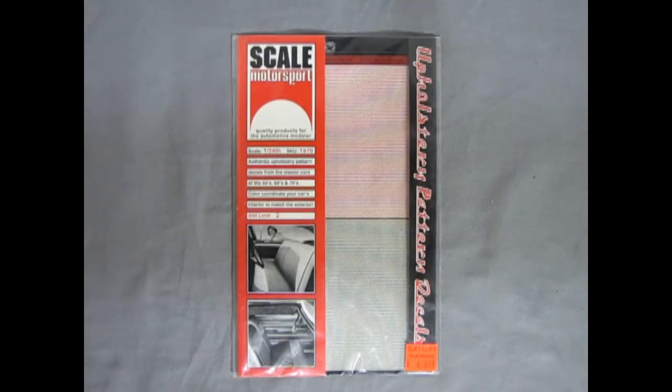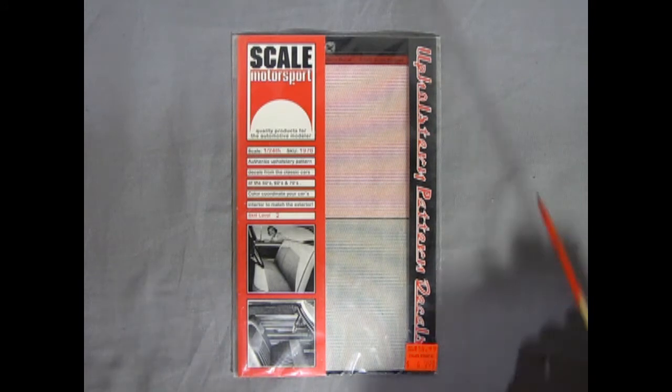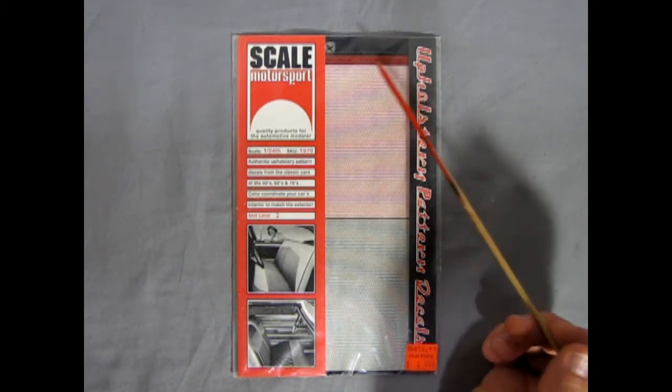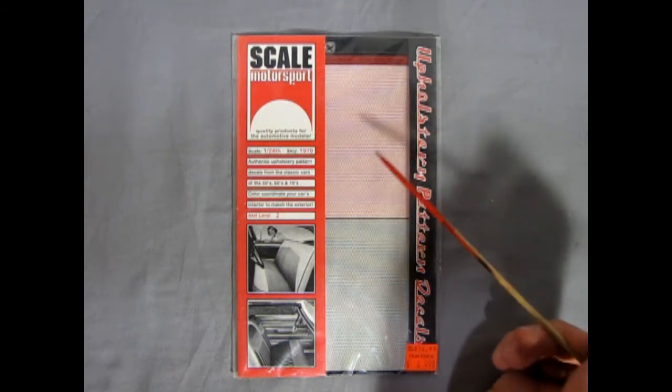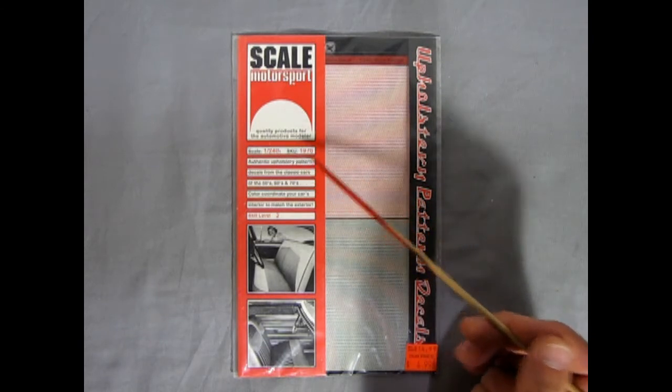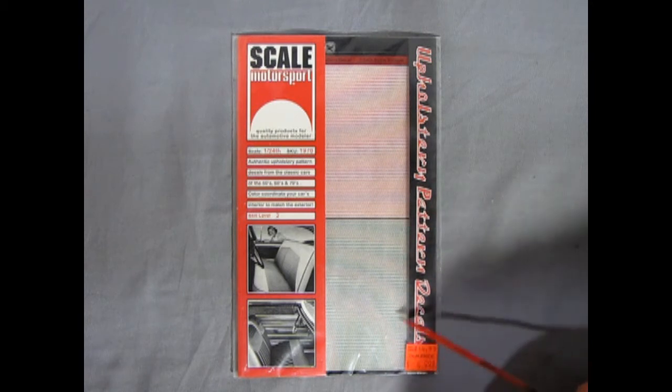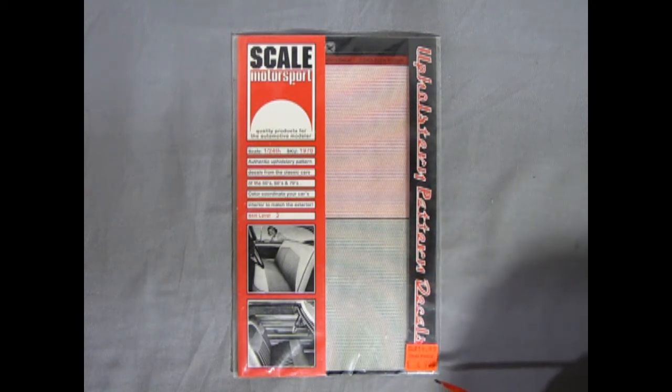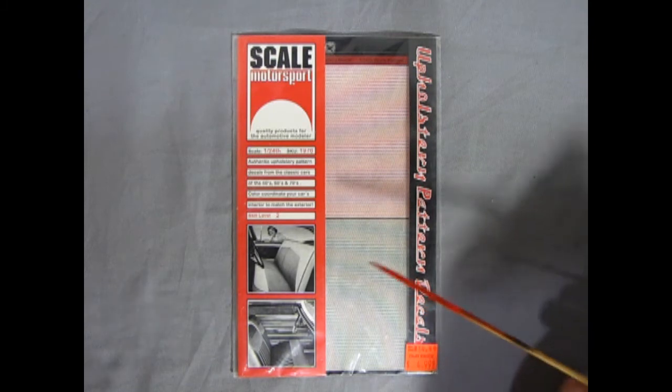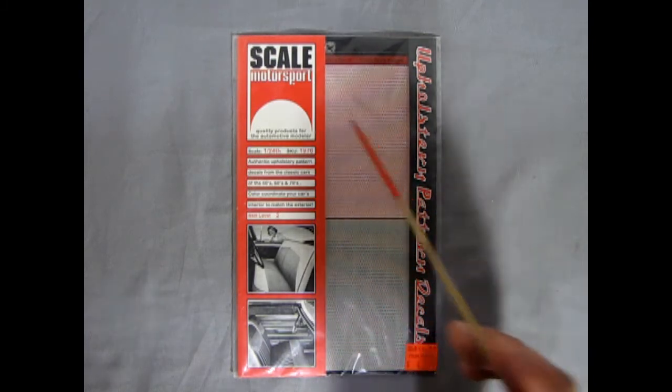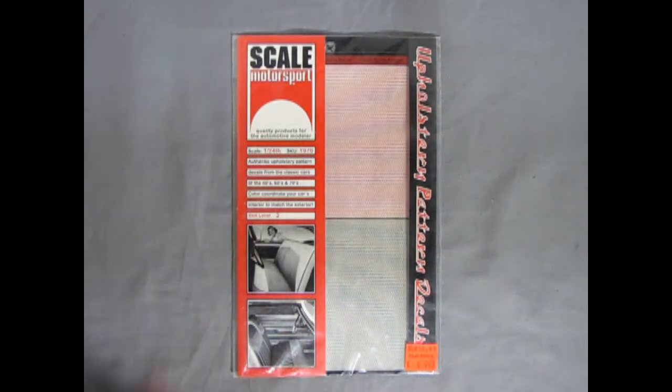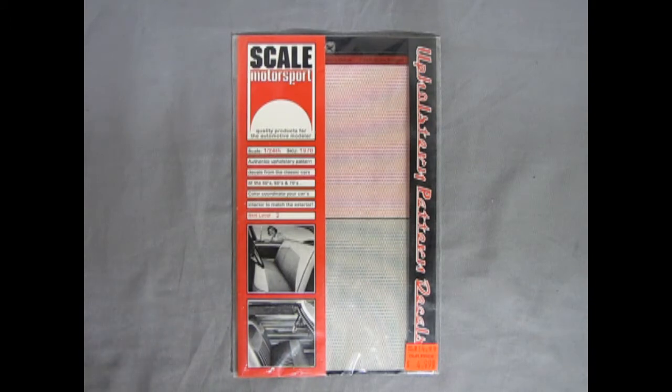Now here's something that's really groovy and also a blast from the past, because I don't know if they still make these. Scale Motorsport decals are interior decals for 125th scale. These are the 1970 pattern. And again, really cool stuff. I did get them. They were $14.99 and got marked down to $4.99 a long time ago. But these will dress up any interior. And now I'm going to show you the interior of this model kit with the Scale Motorsport decals installed.